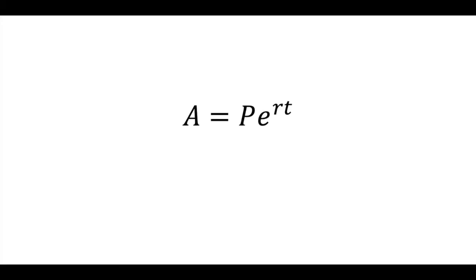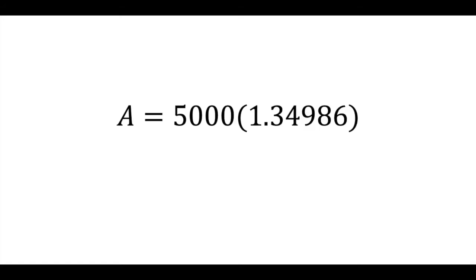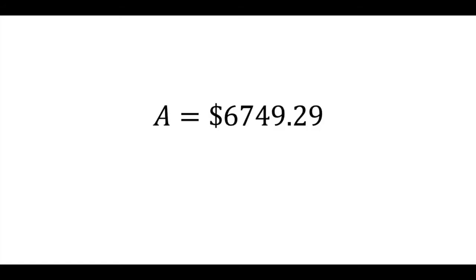So, for our certificate of deposit, we plug everything in and do a quick three-step calculation, and we find that the maximum possible amount in the account after five years is $6,749.29, rounded down to the nearest cent because, of course, this is a bank.